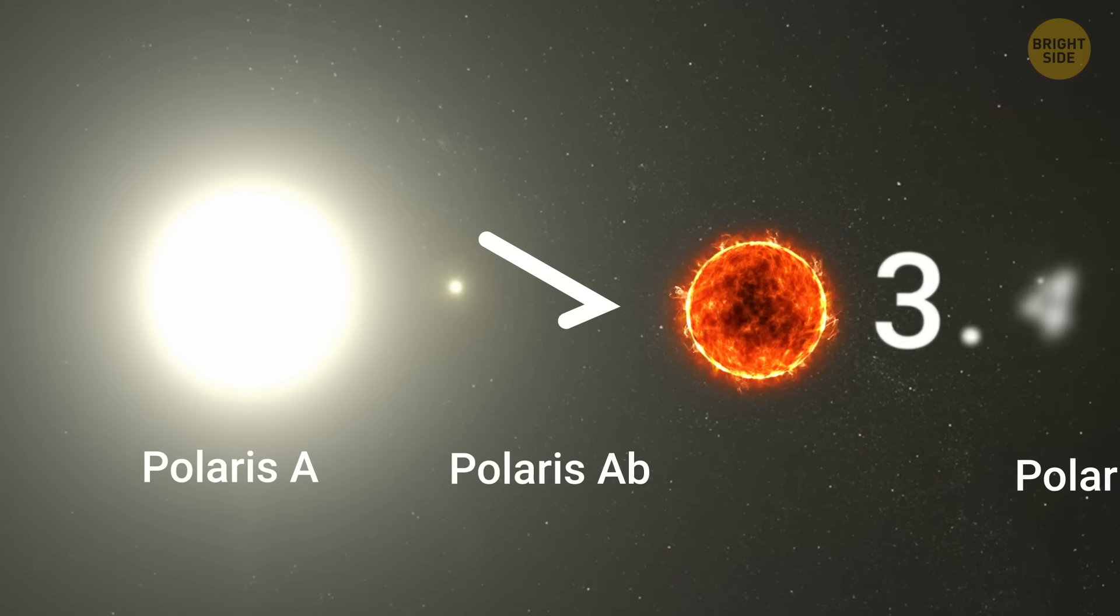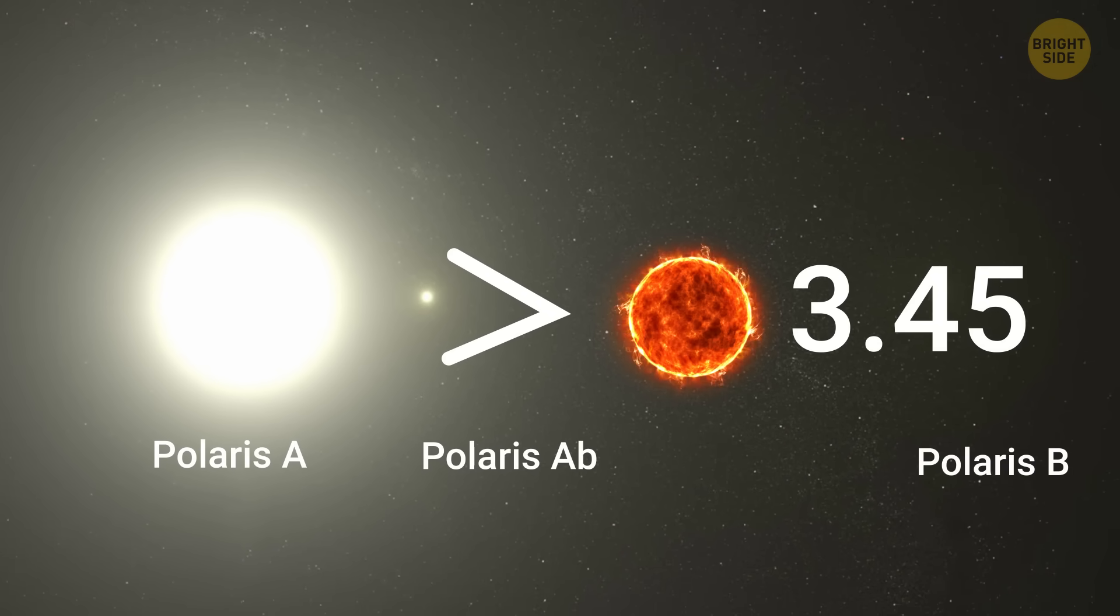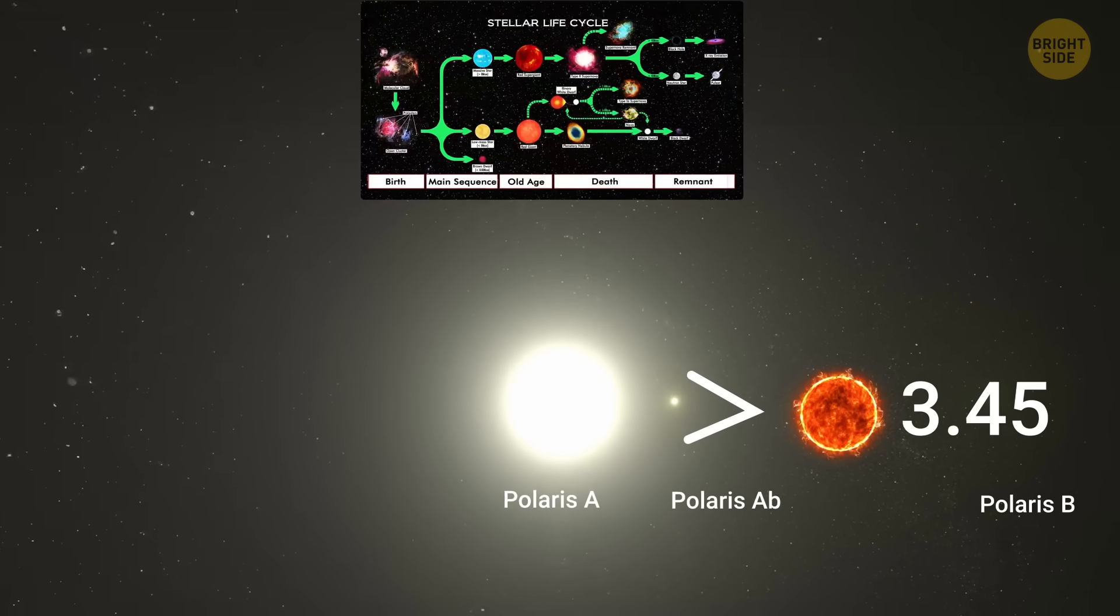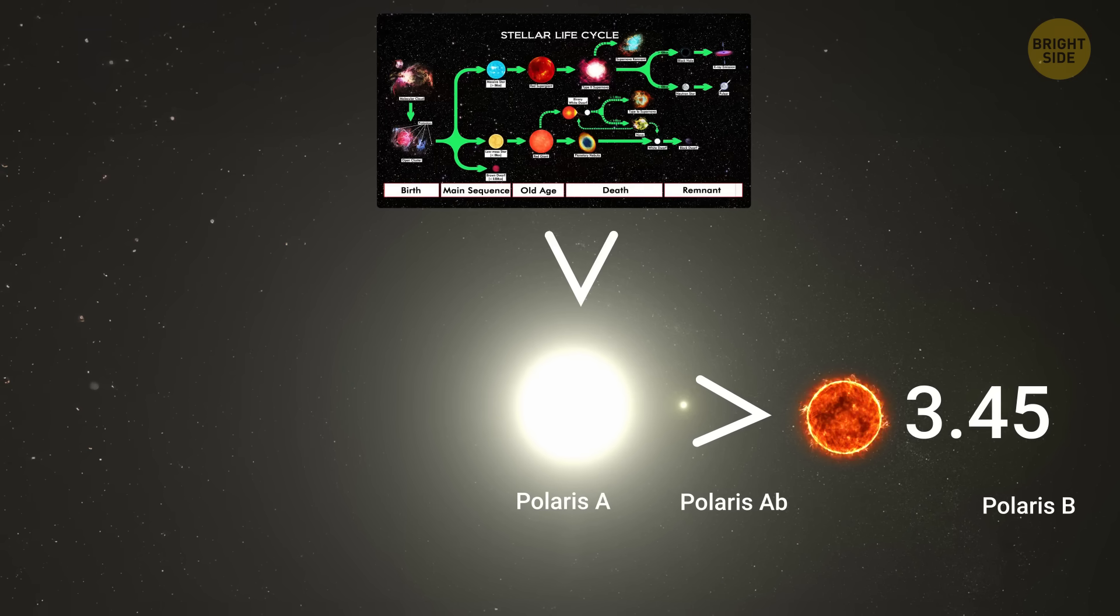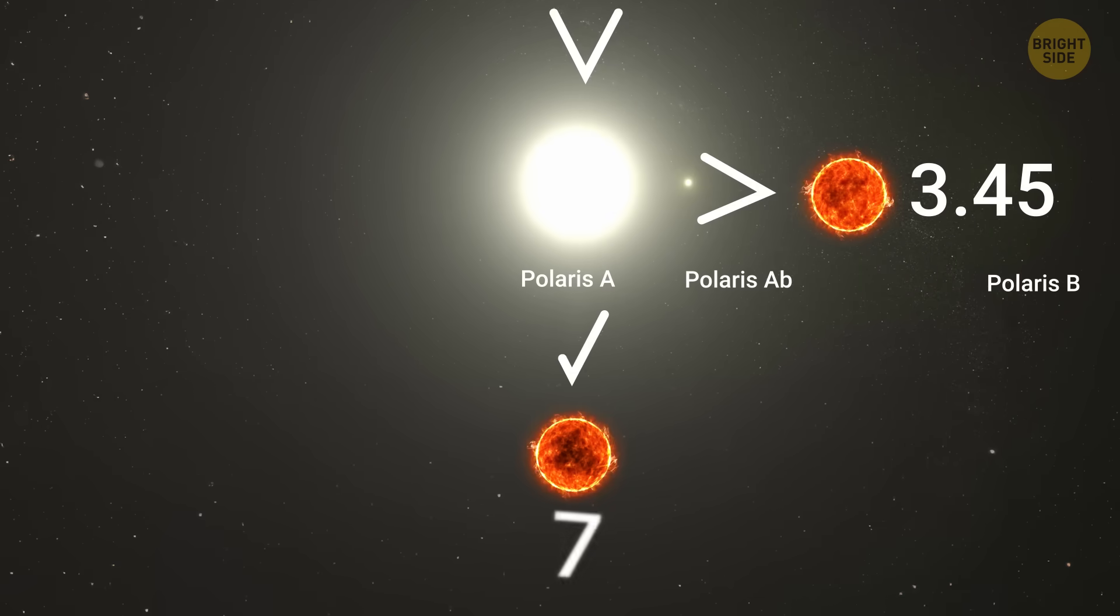Polaris is supposed to be around 3.45 times the mass of the Sun, but that's much less than the mass you get from Stellar Evolution models. They suggest a value of almost 7 times the mass of the Sun.